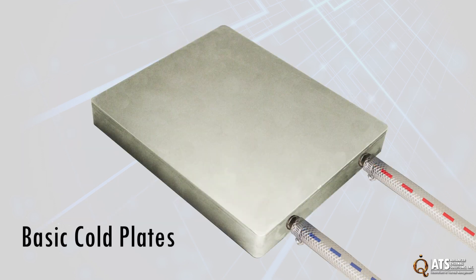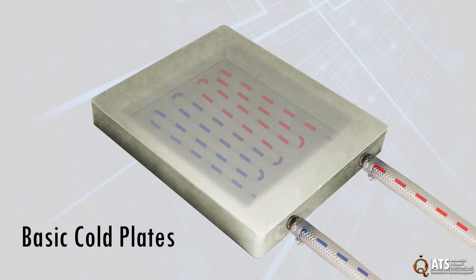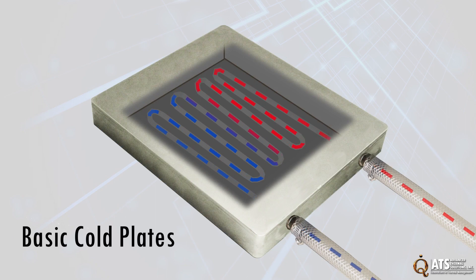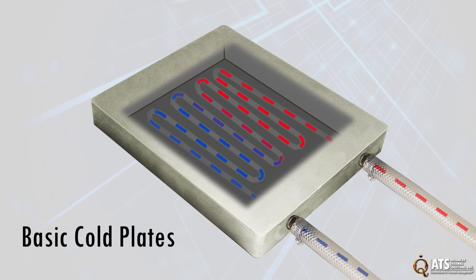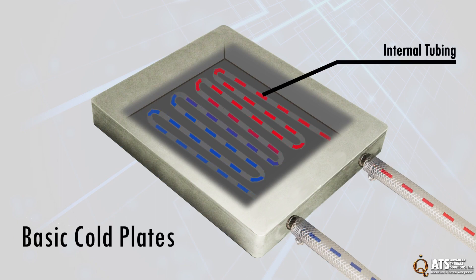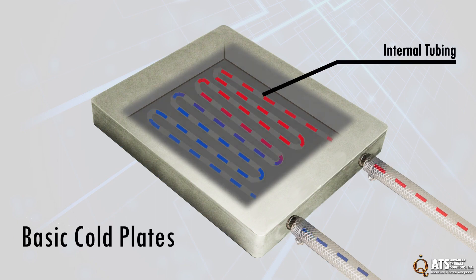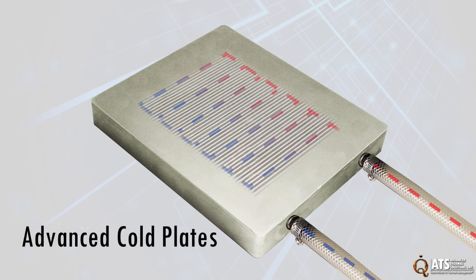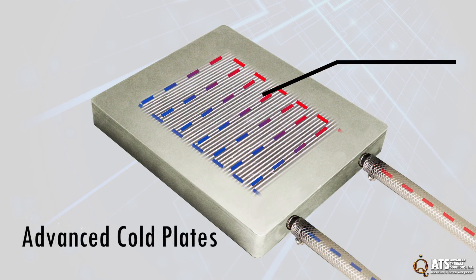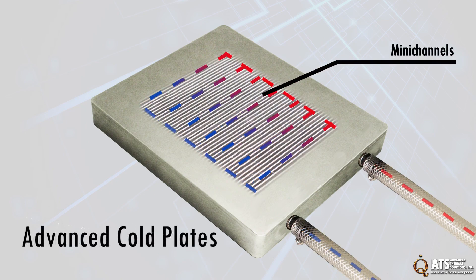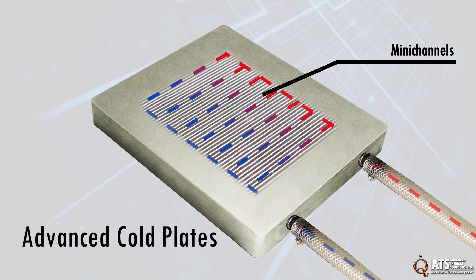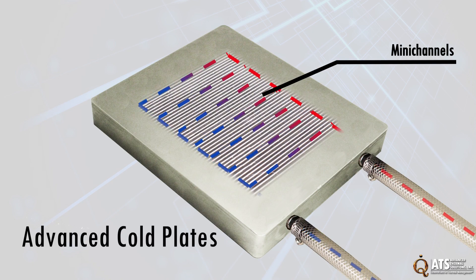At their most basic level, cold plates are metal blocks, generally aluminum or copper, that have inlets and outlets and internal tubing to allow liquid coolant to flow through. More advanced cold plates feature mini-channels to lower thermal resistance or use nanofluids as a coolant to improve heat transfer capabilities.